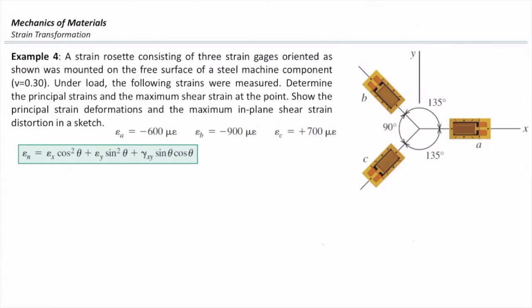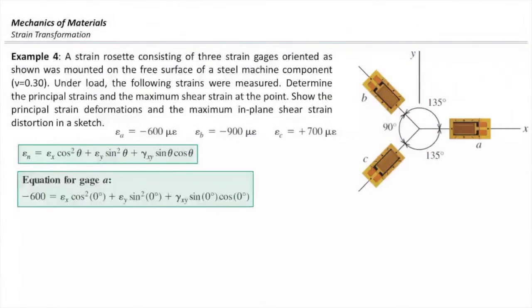First, set up our system of unknown equations. How much is the angle of gauge A with the horizontal axis? That is 0. Okay? And the reading of that gauge is negative 600. So I can set my first equation for that gauge. That would be negative 600 is equal to epsilon x times cosine squared of 0 plus epsilon y sine squared of 0 plus gamma xy sine of 0 cosine of 0. All right?